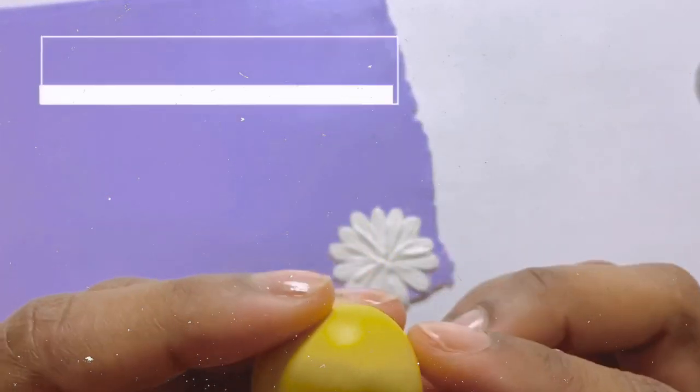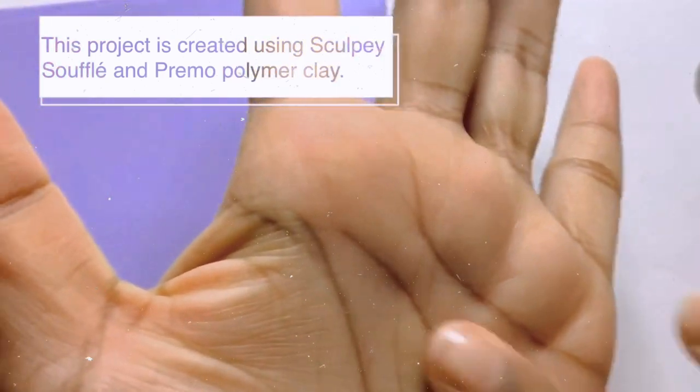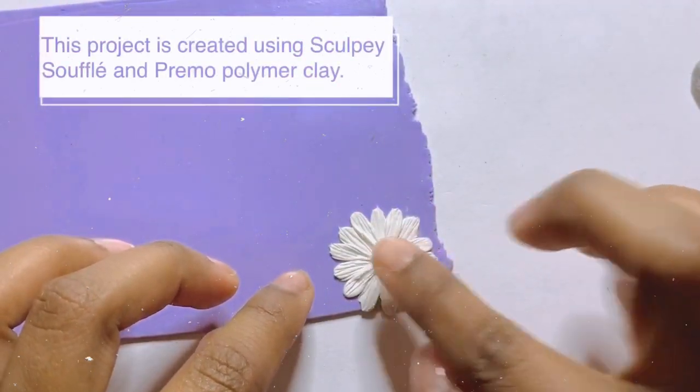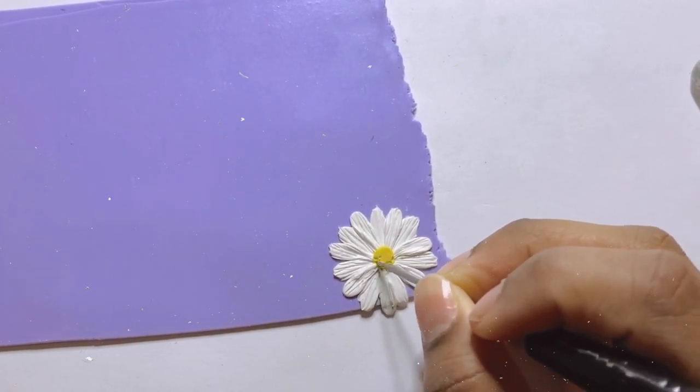To create the pistil of this daisy, I pulled out a little bit of yellow clay, rolled it into a ball and pressed it to the middle of the flower. Then I textured it using my needle tool.